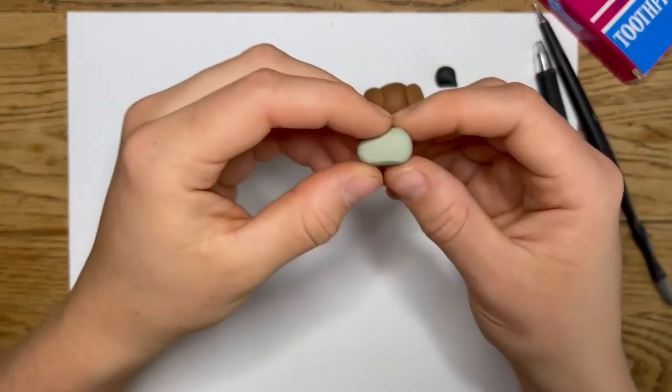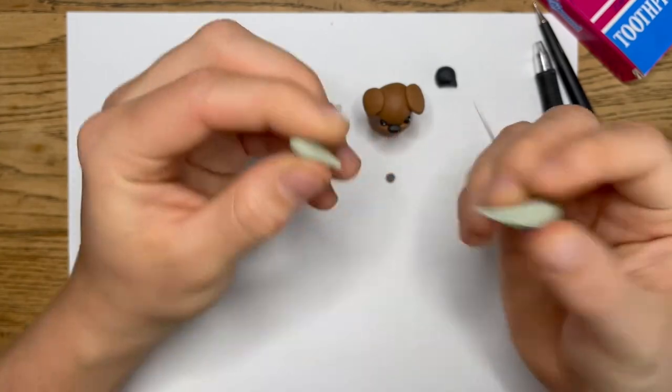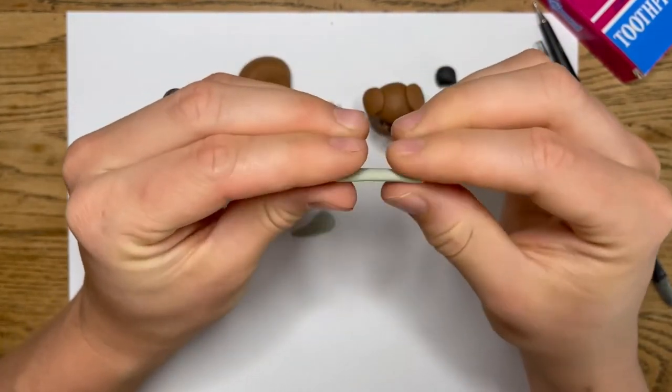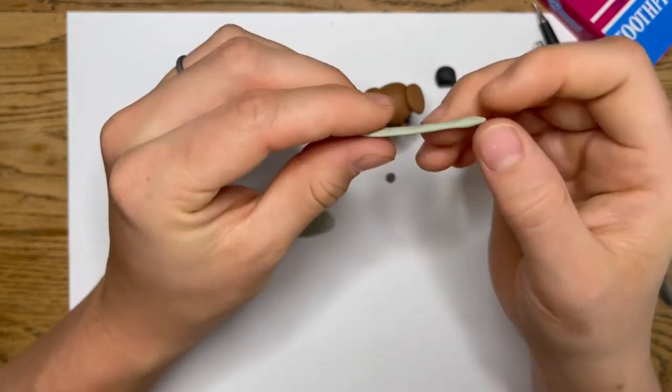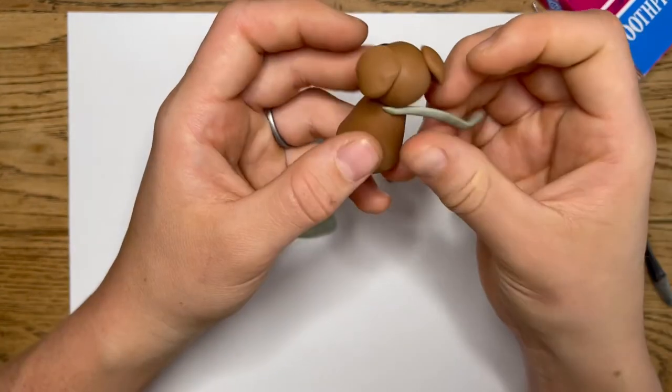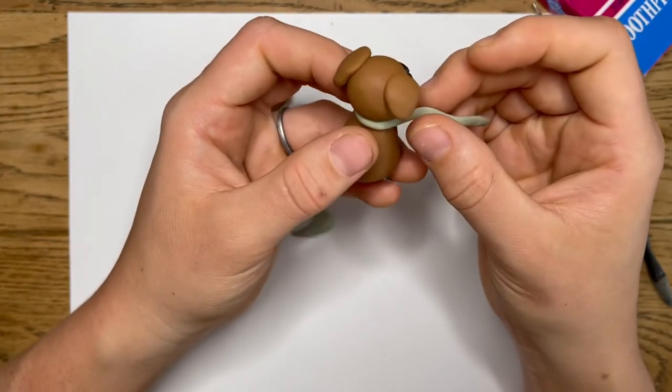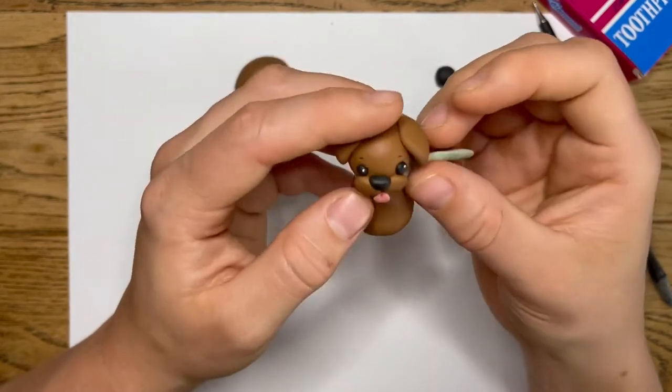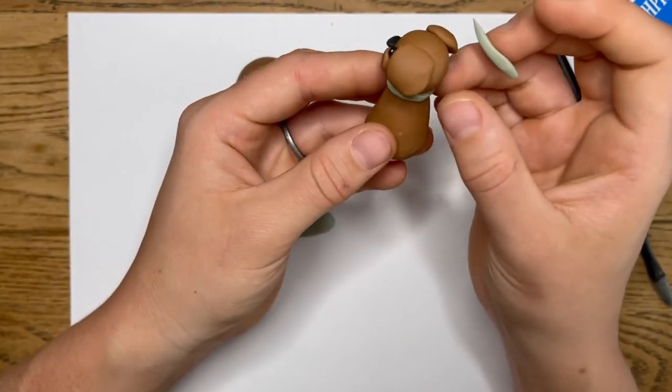Now to make the dog's collar, we're going to take a little bit of our collar color, break it off, and then roll it into a thin snake, like so. Once you have the snake, press it between your fingers to flatten it, and then we'll take that, we'll start in the back, so you don't see the seam very easily, and we're going to loop it around. Once you get to the back, break that off, and then smooth it in.